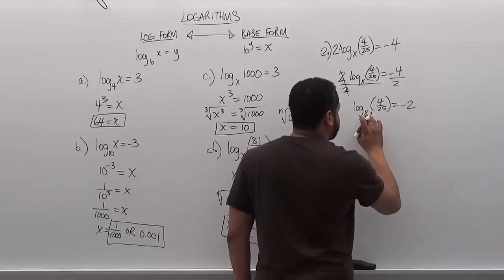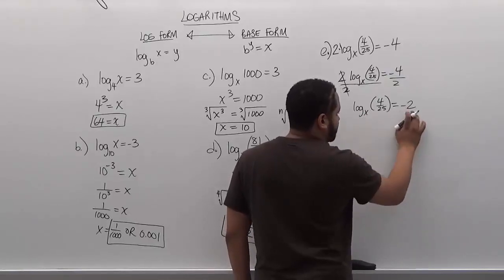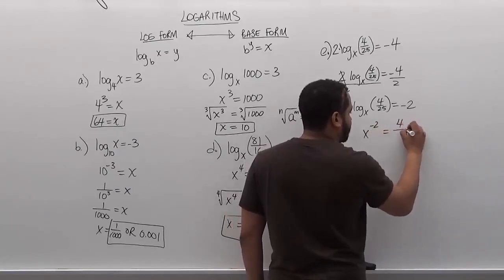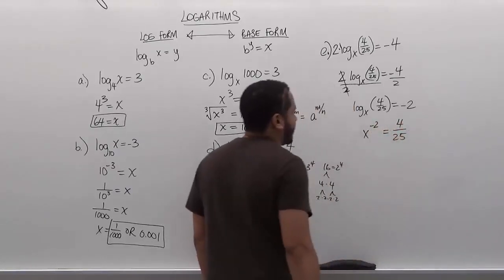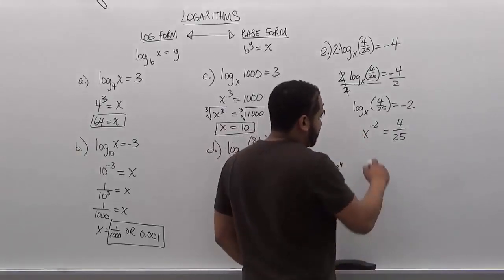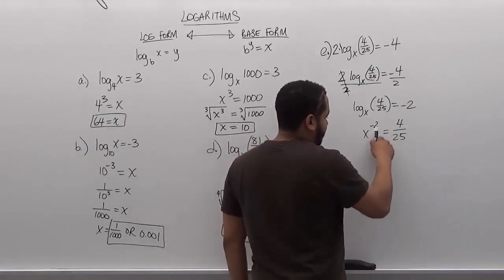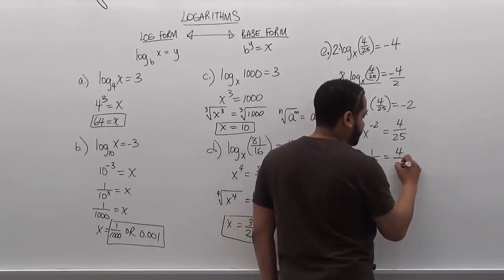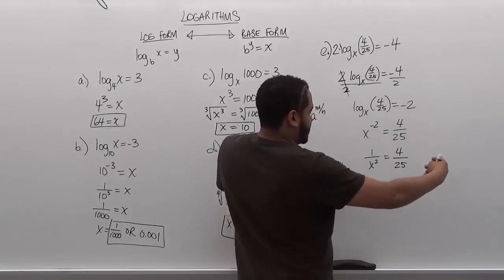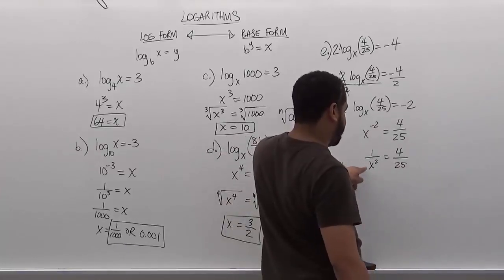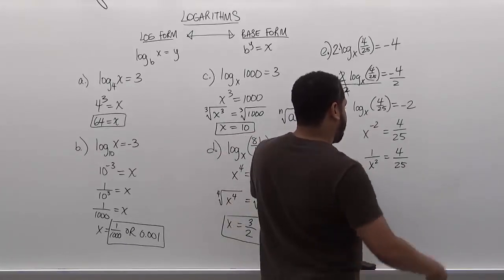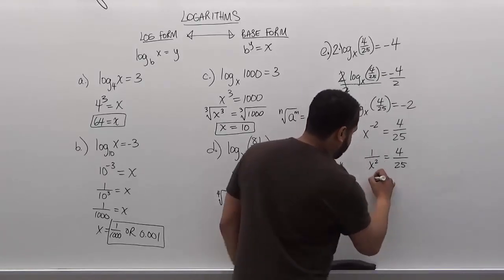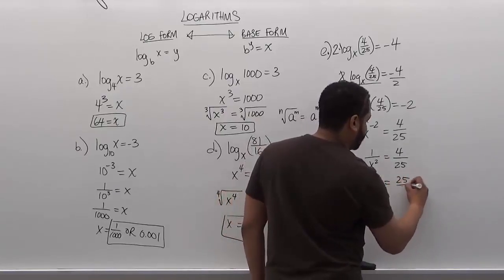Now we have x to the negative 2 equals 4 over 25. What we're going to do is revert this to its original form because it's in a negative exponential term. So we have 1 over x squared equals 4 over 25. We're going to invert both sides because we have direct proportions now, two fractions equal to each other. So we get x squared is equal to 25 over 4.